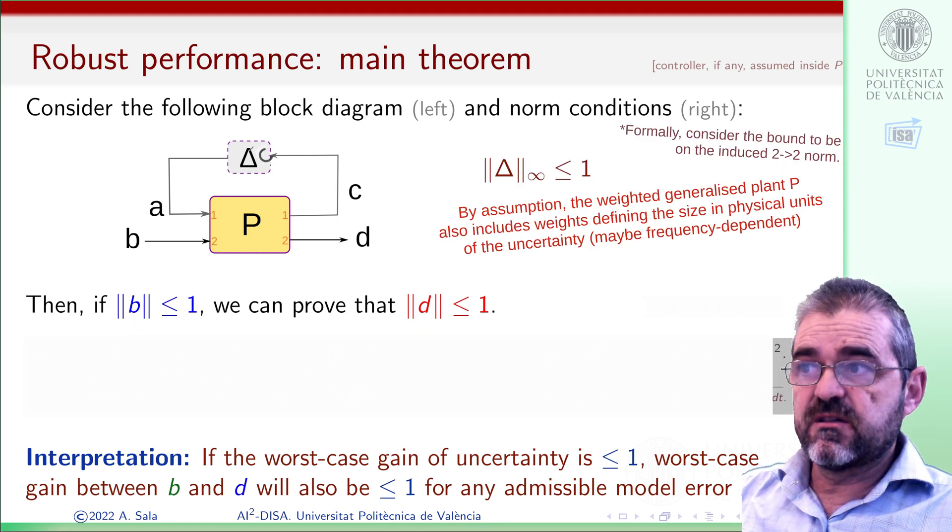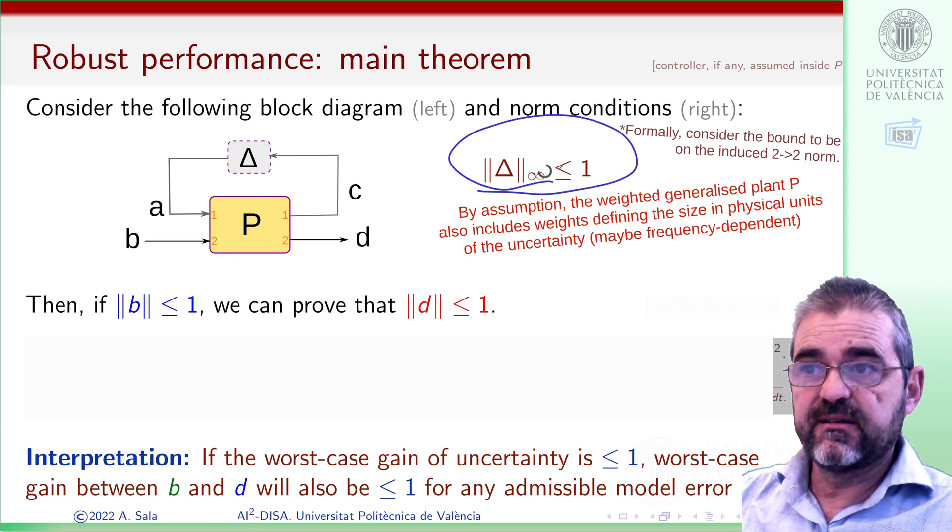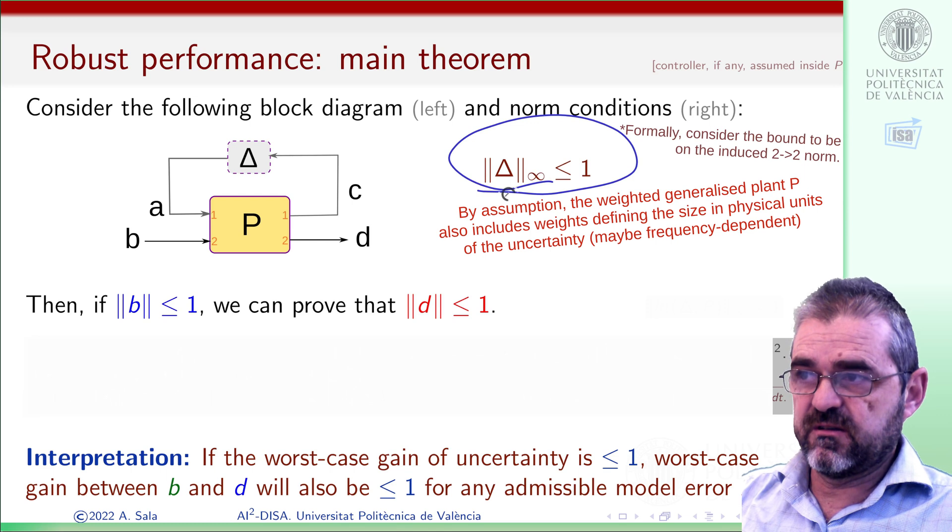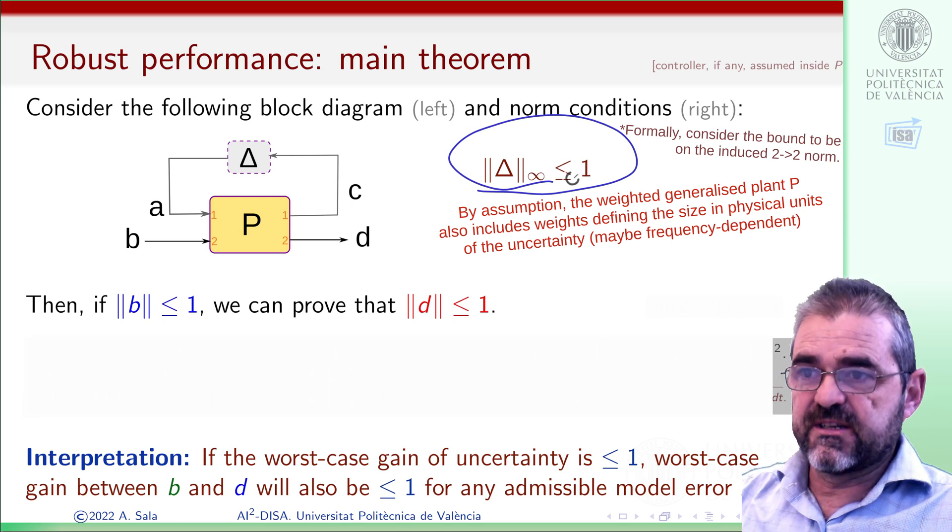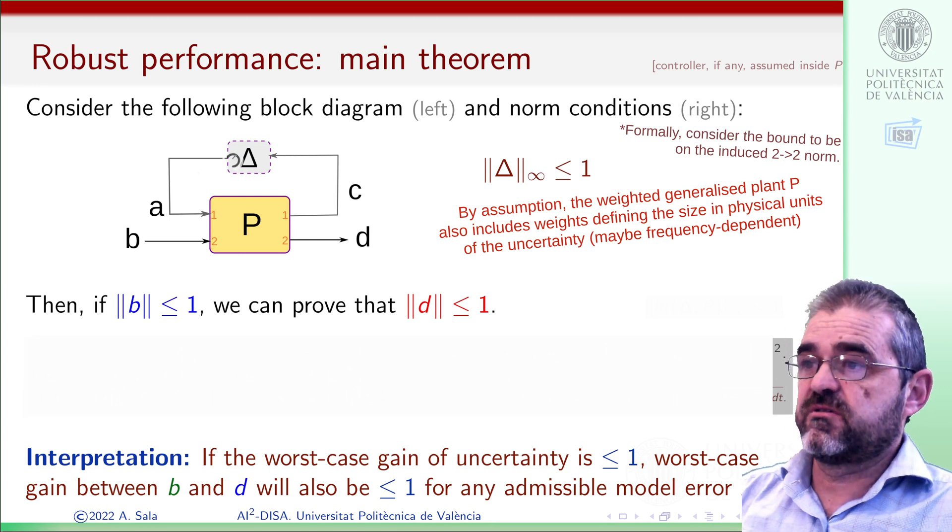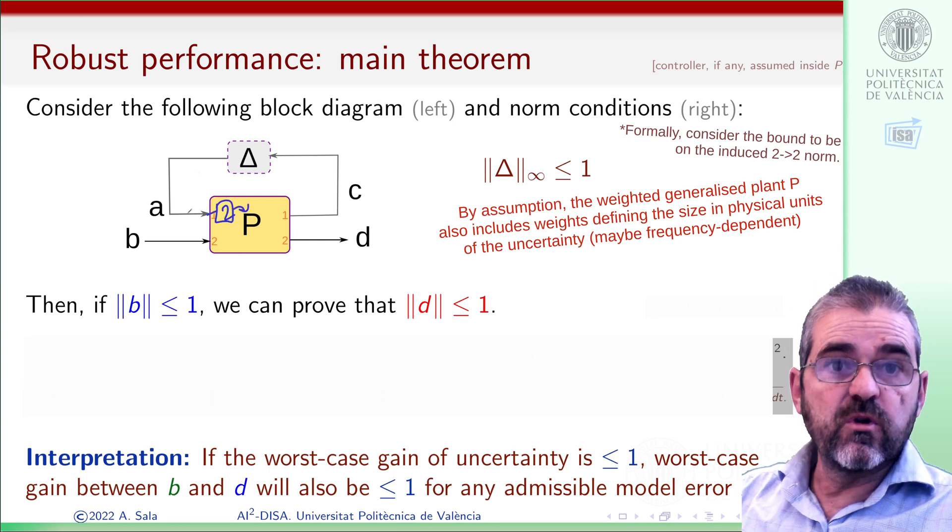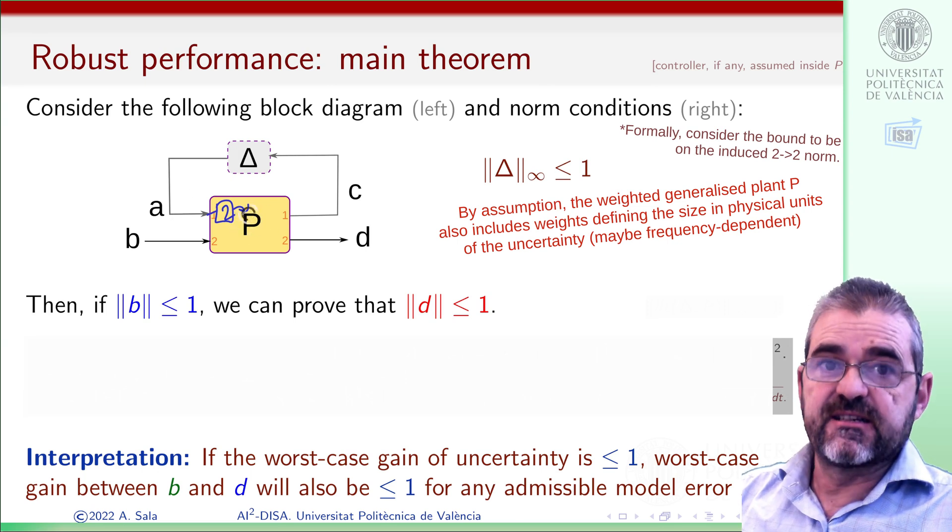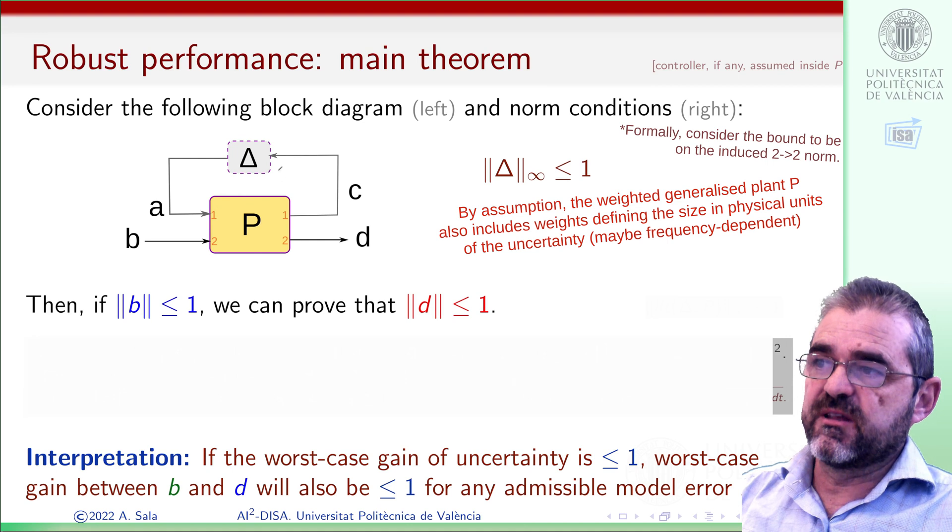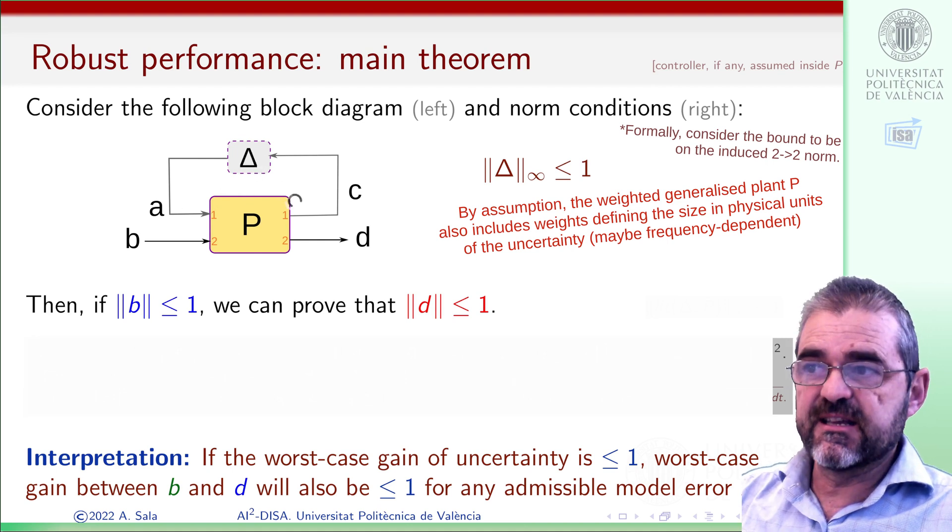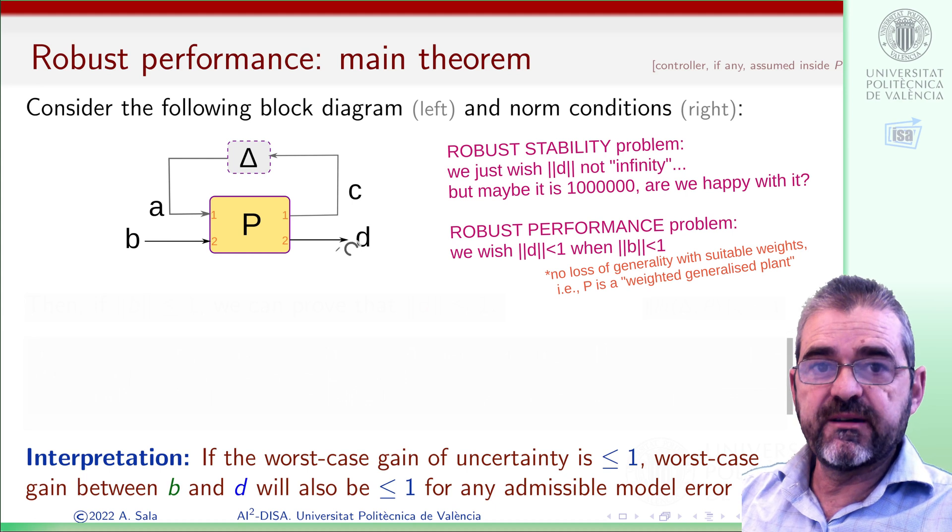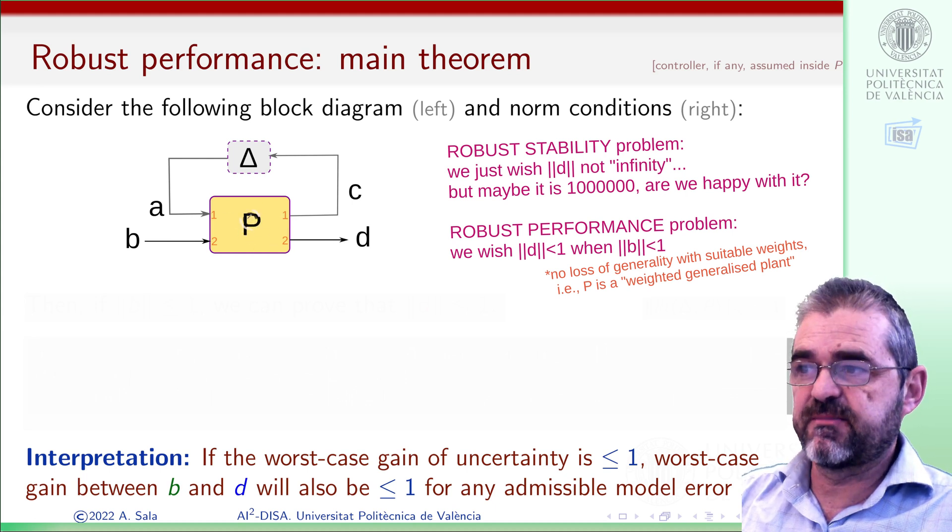such weights or scalings from normalized unit norm signals to actual physical units are assumed to be inside P. In the same way, the uncertainty delta will be assumed to have a size of 1, a worst-case gain of 1. If it's linear, it will be the infinity norm, peak of frequency response; if it's nonlinear, it will be just a worst-case gain. So we will assume that its gain is bounded by 1, because if it's bounded by 2, we could just multiply signal A by 2 before entering physical models of my control system. So there is no loss of generality in assuming that delta has size 1, so signals A and C are suitably scaled, and in the same way B has size 1, and D must be below 1 with suitable scalings inside this generalized plant P.